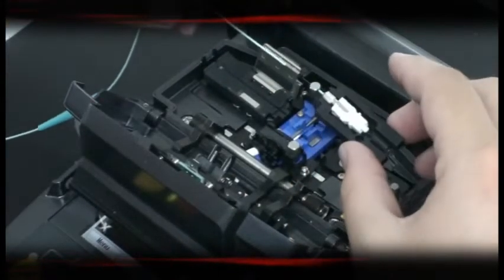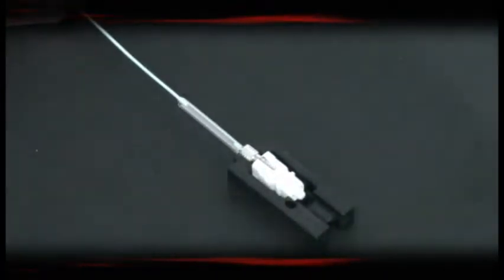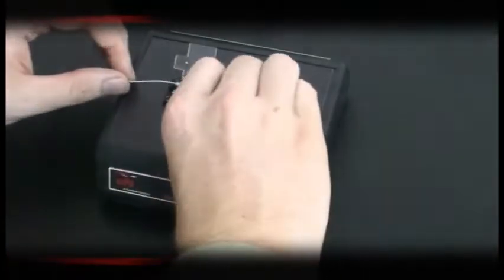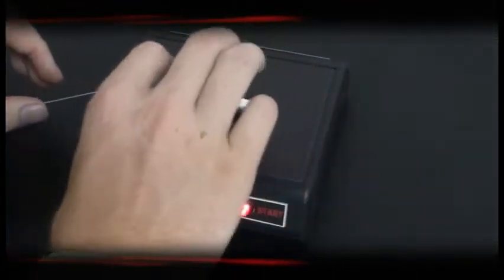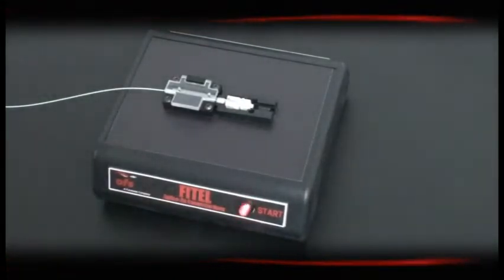Once the Fusion Splicing cycle has completed, remove the connector and connector holder from the splicer and slide up the SOC Fusion Splice Protection Sleeve to cover the splice. It is important that an equal amount of the splice sleeve covers the buffer on each side of the Fusion Splice. Now transfer the SOC to the OFS Phytel splice sleeve oven, recheck that the protection sleeve has remained centered, and heat the splice sleeve according to the included instructions.